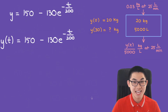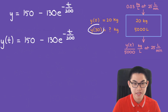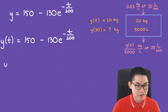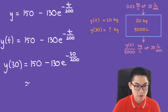The final step is to find y(30). So y(30) = 150 − 130 · e^(−30/200), which is approximately 38.1 kilograms of salt.